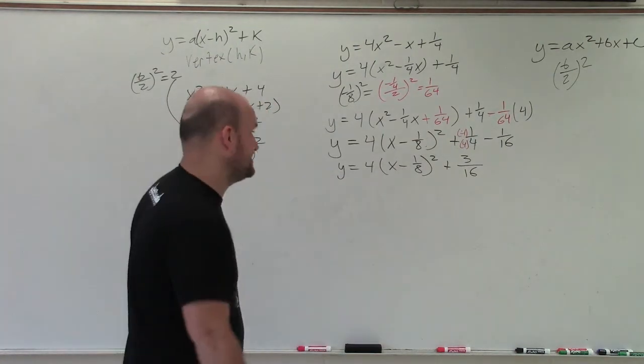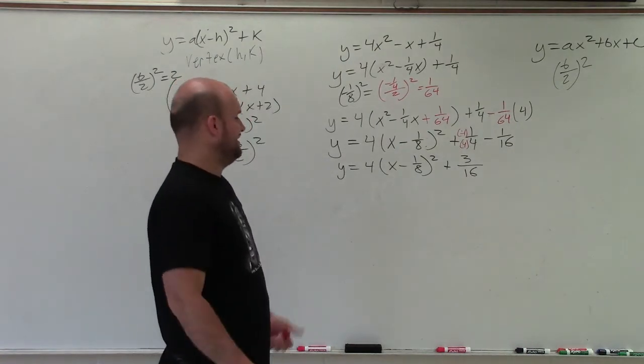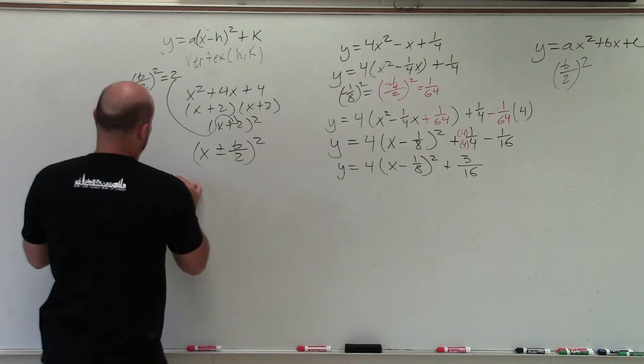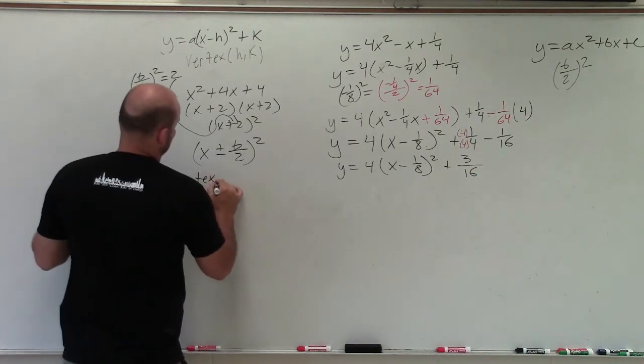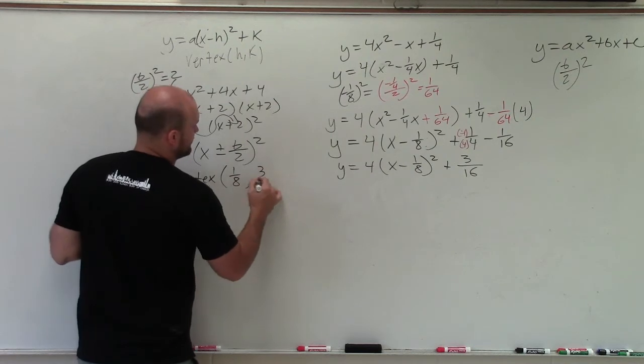Now we need to graph this. It doesn't really look that much fun, right? The main important thing is our vertex. We know it's going to be 1 eighth comma 3 over 16.